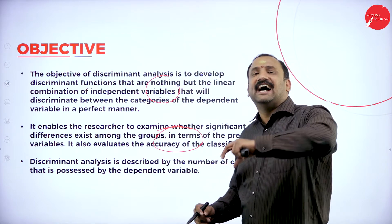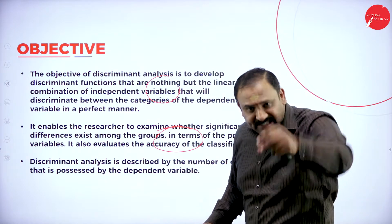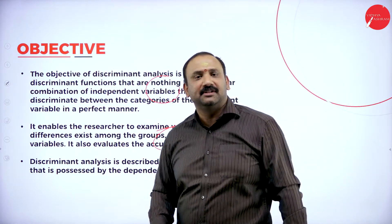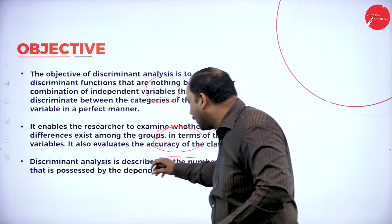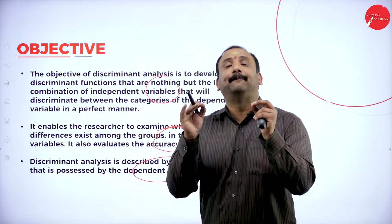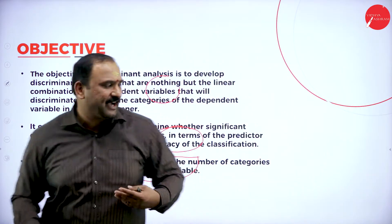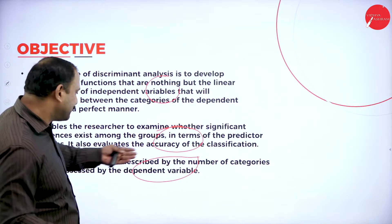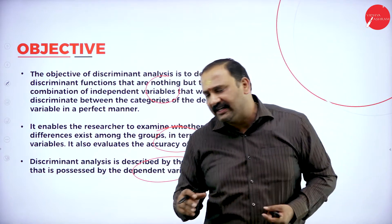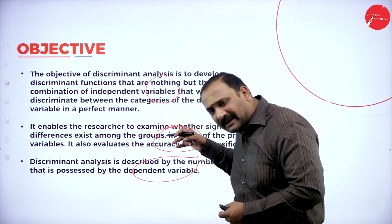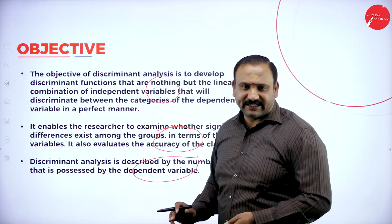Discriminant analysis also evaluates the accuracy of the classification — there is an accuracy factor, and that is where classification comes into picture. Discriminant analysis is described by the number of categories possessed by the dependent variable. What are the factors involved in that dependent variable? That matters a lot and completely comes into picture in terms of analyzing whether it is dependent or independent in nature.